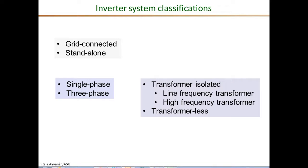Then you can have a classification based on whether the inverters have galvanic isolation using transformers or transformer-less topologies. Among those which have a transformer, you could have a line frequency transformer at 50 Hz or 60 Hz. Most high-power utility scale inverters employ line frequency transformers to step up the relatively low voltages of 400 to 600 volts RMS line-to-line to distribution or sub-transmission level voltages, while also providing isolation.